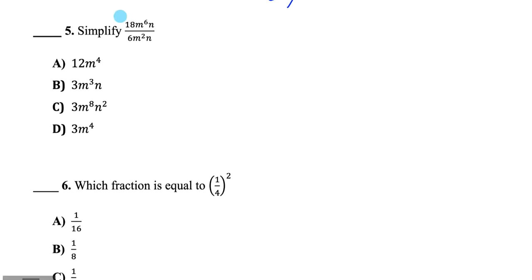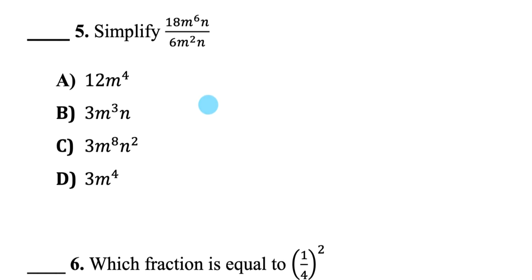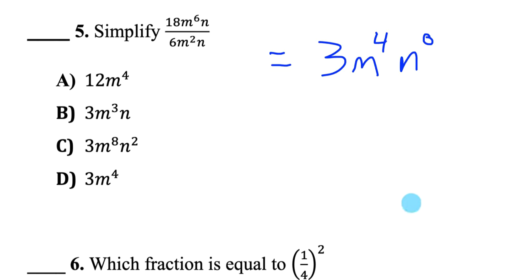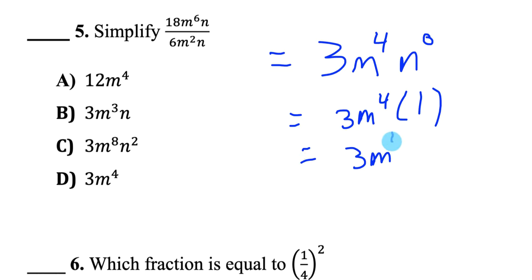Question 5: I have a quotient of two expressions. Start with the coefficients — 18 divided by 6 is 3. Then for powers of m being divided, keep the base and subtract the exponents: 6 minus 2 is 4. For powers of n: 1 minus 1 is 0, meaning n to the power of 0 equals 1, so that term disappears. The answer is 3m to the 4, D.